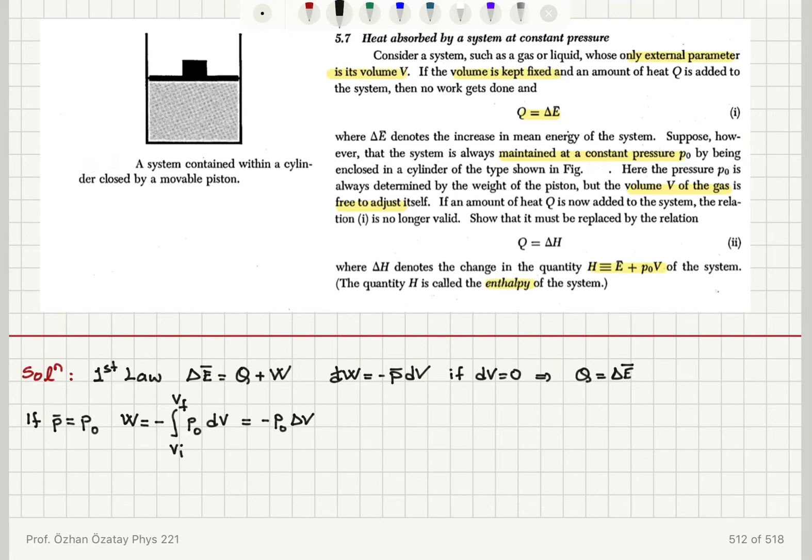Now if I write the first law of thermodynamics again, the first law tells me that delta E bar is equal to the heat added to the system plus the work done on the system, which is Q minus P0 delta V. Then I find that under these conditions, Q is equal to delta E bar plus P0 times delta V.